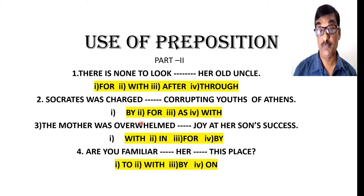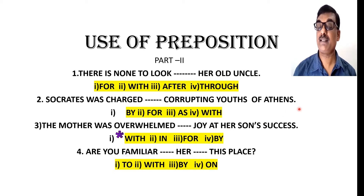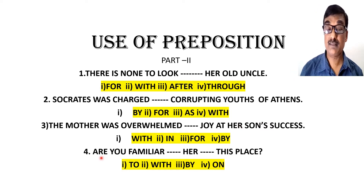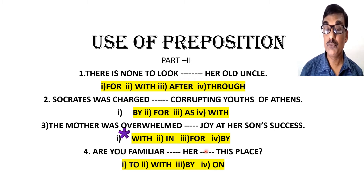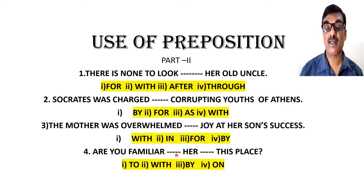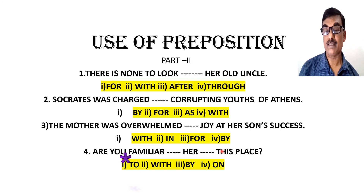The next example: 'The mother was overwhelmed [blank] joy at her son's success.' Here 'with joy' and 'at somebody' are used together. Next: 'Are you familiar [blank] her / [blank] this place?' The word 'familiar' takes 'with' when referring to a person and 'to' when referring to something or someplace. So the answer is: 'Are you familiar with her / familiar to this place.'